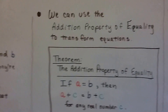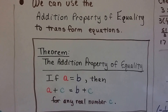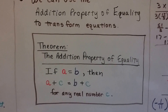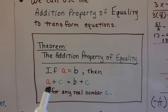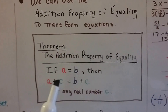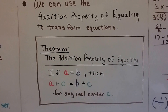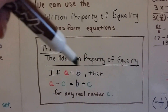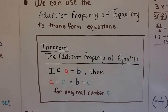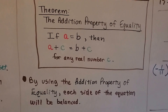We can use the addition property of equality to transform equations. This is our first theorem — the addition property of equality. It says: if a equals b, then a plus c equals b plus c for any real number c. All this means is if a and b are equal and we add a third number to each side, both sides remain equal because a and b are the same number. By using the addition property of equality, each side of the equation stays balanced.